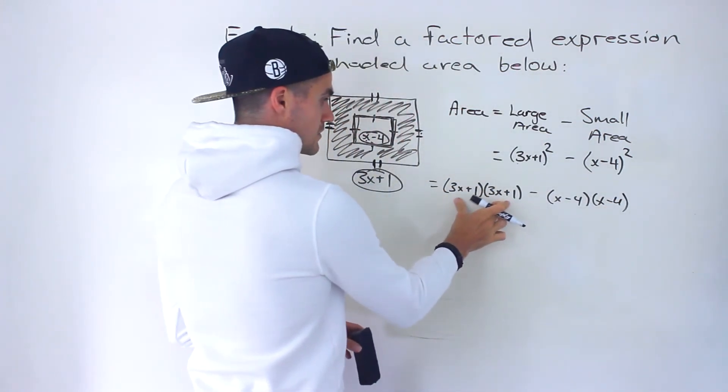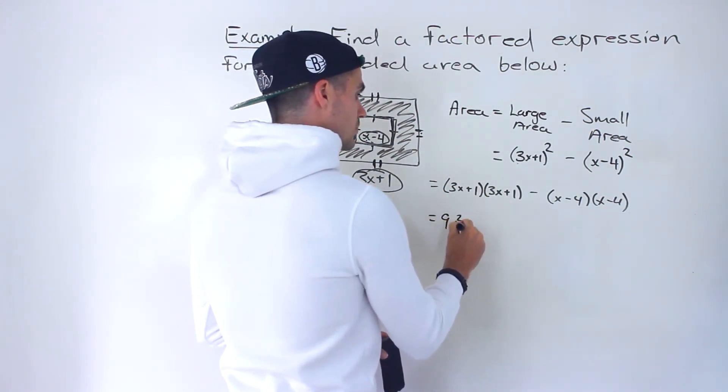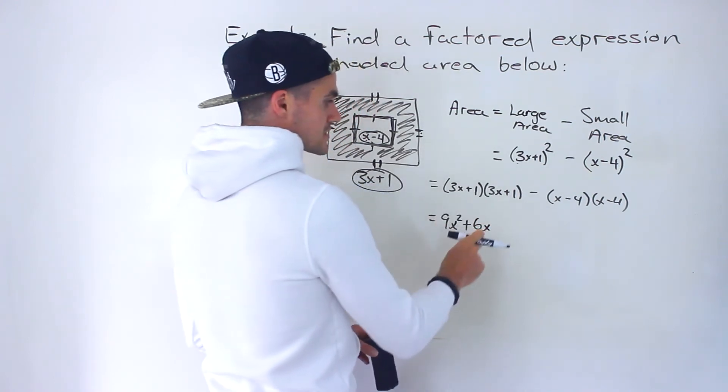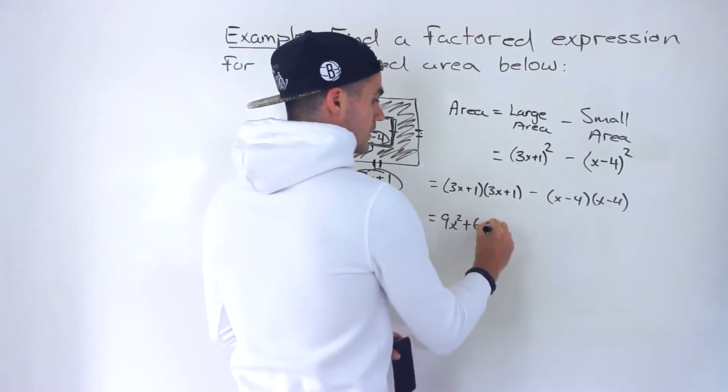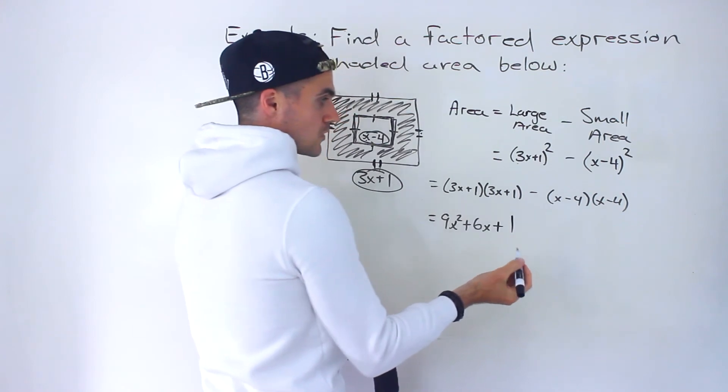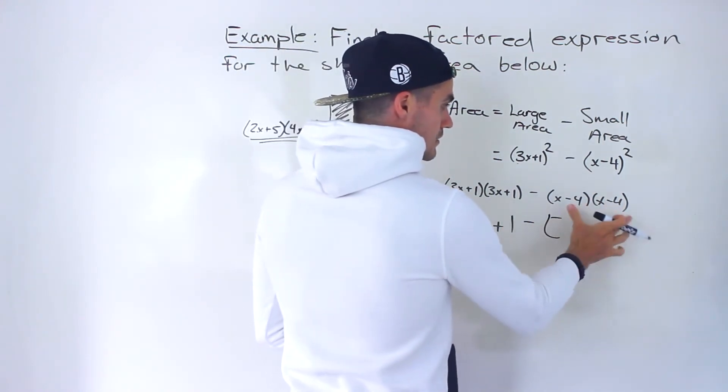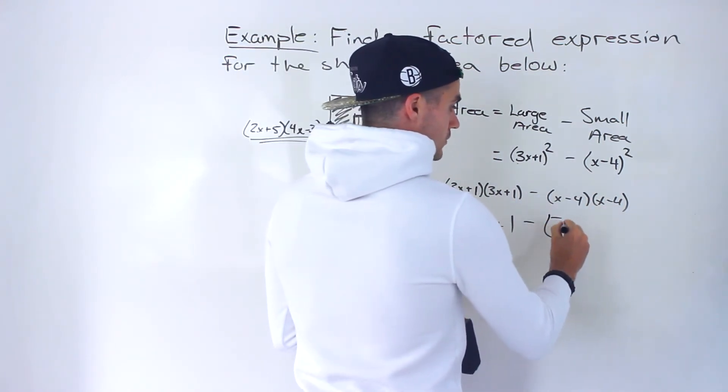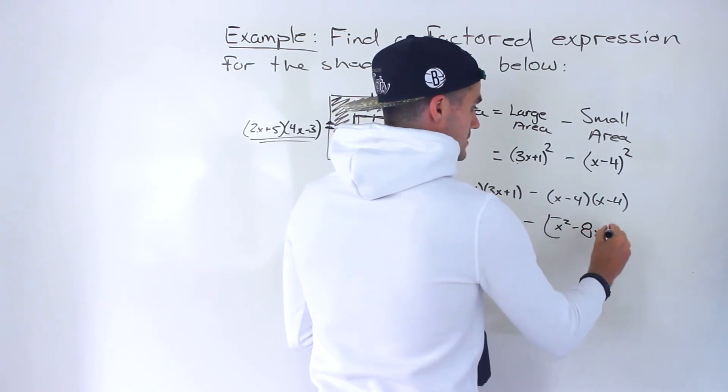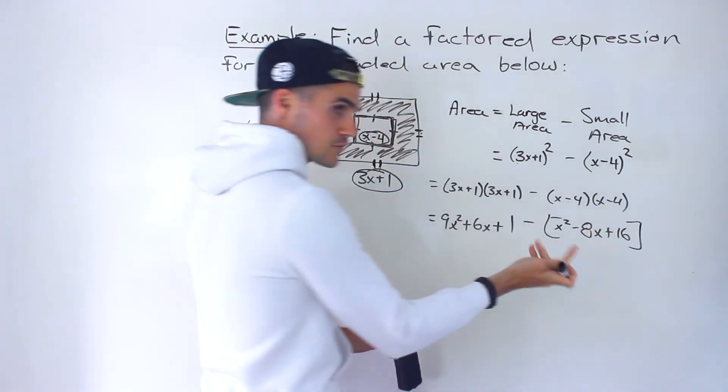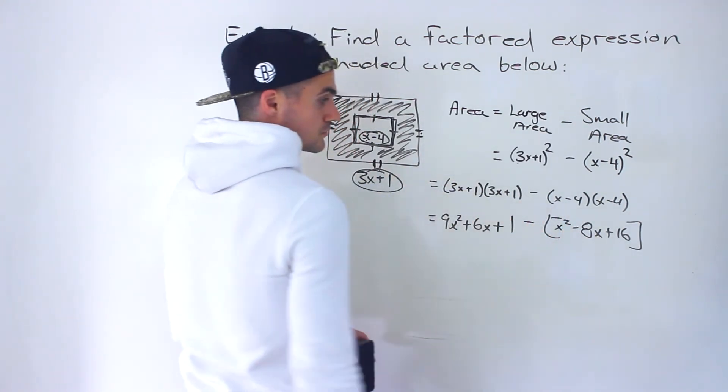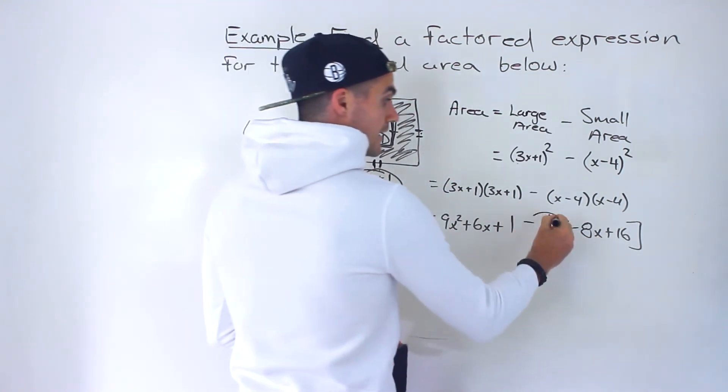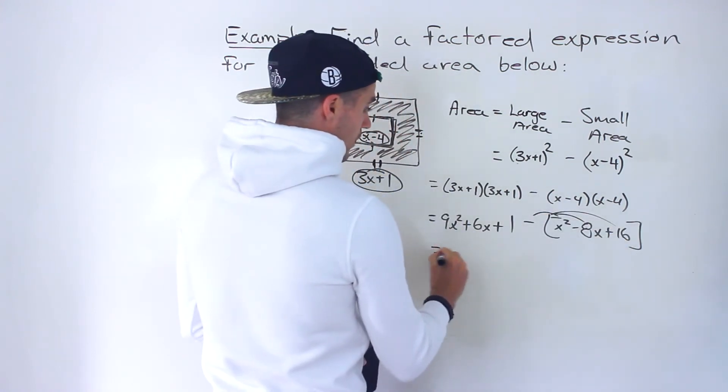If we expand everything, we'll have (3x+1)(3x+1) minus (x-4)(x-4). We'll FOIL these brackets out. Multiplying these two brackets, you'd end up with 9x² + 6x + 1 minus these two brackets. When you multiply them out, you'll have x² - 8x + 16.